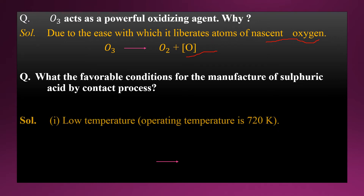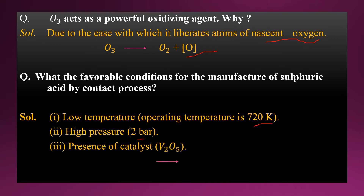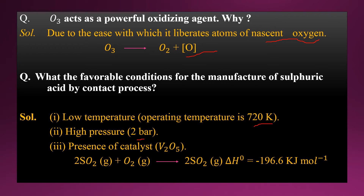The next question is: what are the favorable conditions for the manufacture of sulfuric acid by the contact process? The first condition is that temperature should be low, around 720 Kelvin. The second condition is that the pressure should be high, around 2 bar. The third condition is that the reaction should occur in the presence of a catalyst. When sulfur dioxide reacts with oxygen, sulfur trioxide is formed with liberation of heat of about 196.6 kJ/mol.